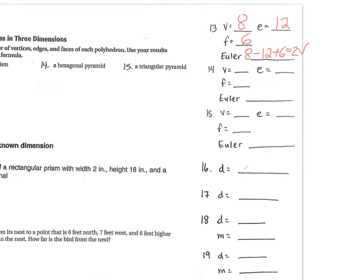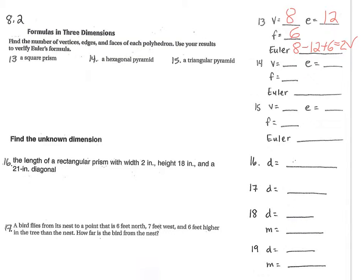Okay, so it says find the number of vertices, edges, faces, and then use Euler's formula. So what you can do is draw whatever the name is given, draw it so you can visualize it, and then from there you can get the information.